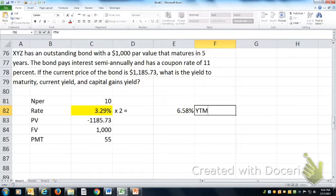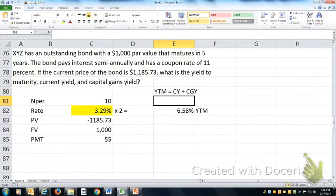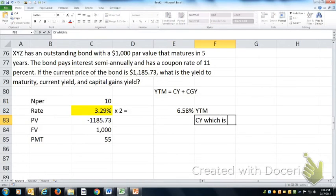So the yield to maturity is equal to the current yield plus the capital gains yield. The current yield, which is annual cash flow, or the coupons, the annual coupon, divided by current price.